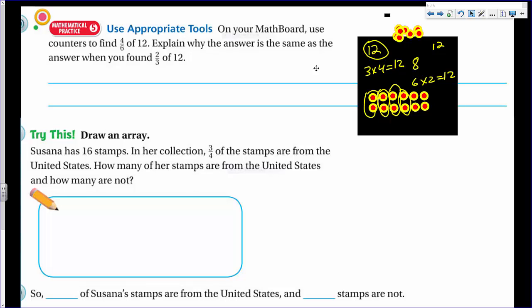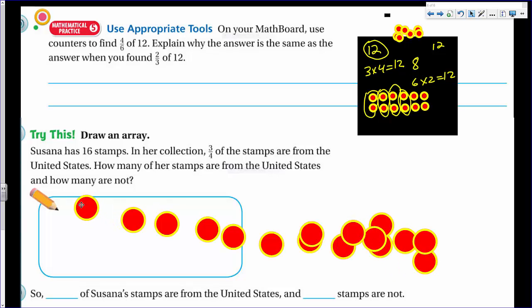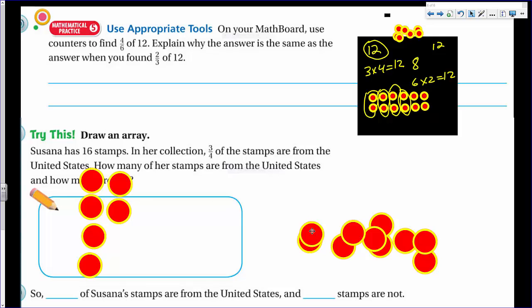Now it says draw an array. Susanna has 16 stamps in her collection. Three quarters of the stamps are from the United States. How many of her stamps are from the United States and how many are not? We have two questions there. So if I have 16 and it says quarters, I'm going to do my fours this way. And I'm going to cover part of my word problem and that's okay. I'm trying because I have to find quarters. I'm wondering if that isn't the way, or maybe it's better to do quarters this way. You know what? Let me do it this way.